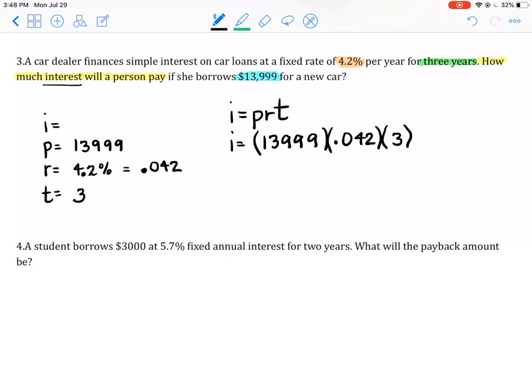And I'm just going to put this entire thing into my calculator carefully. And it looks like we're coming up with 1763.874. So this one will have to be rounded and it's going to stay the same. So $1763.87 is your interest.